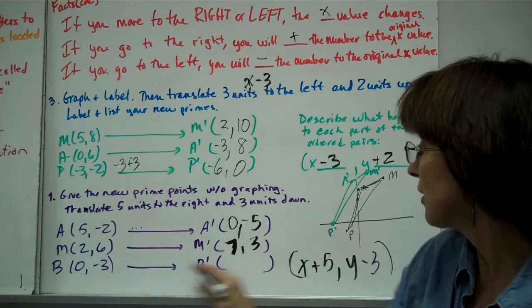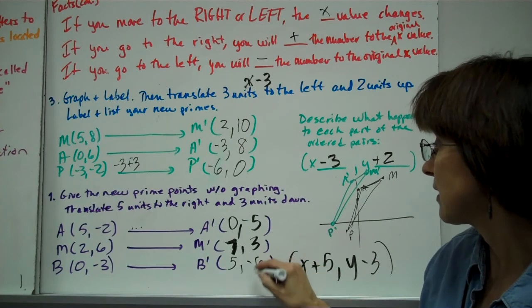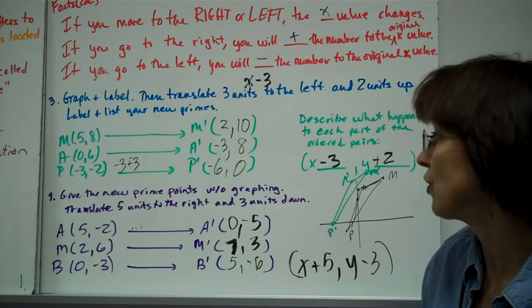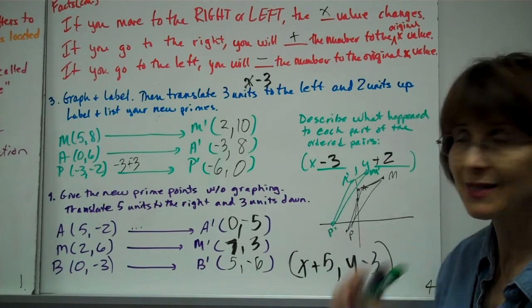In the next one, 2+5=7, 6-3=3. 0+5=5, and -3-3=-6. And if you plot that, you'll see that it moved over 5 to the right and 3 units down. We'll practice and practice more in class.